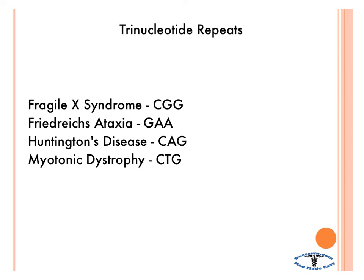We're not going to talk about what they really are, but we're going to talk about how to remember what repeat they actually are. Fragile X is CGG, Friedreich's ataxia is GAA, Huntington's disease is CAG, and myotonic dystrophy is CTG.